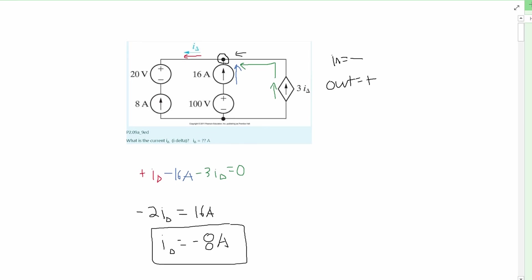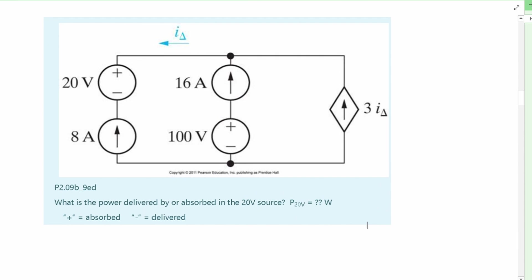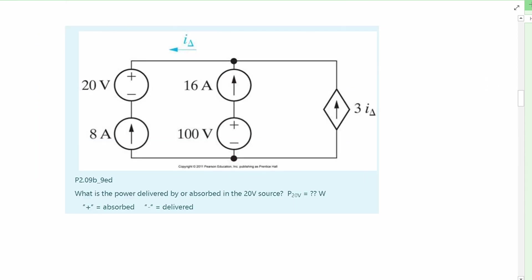That's how we're going to find the power on the 20 volt circuit. Back down to our current problem, I'm going to re-show how we find the I delta.